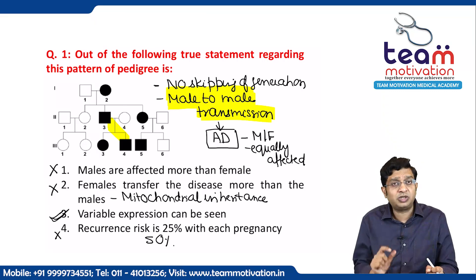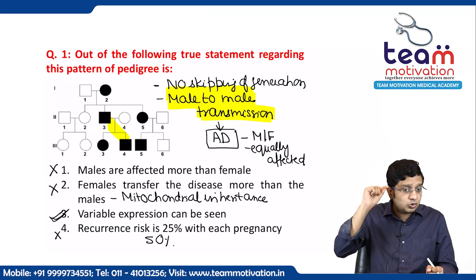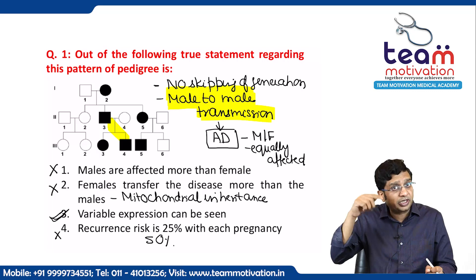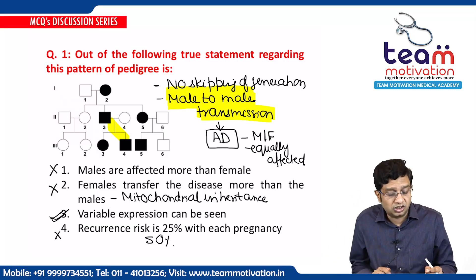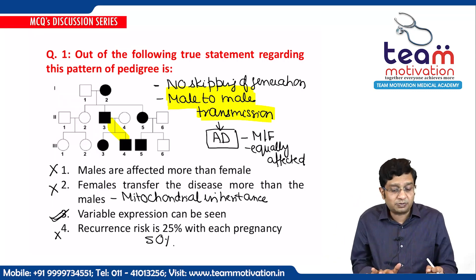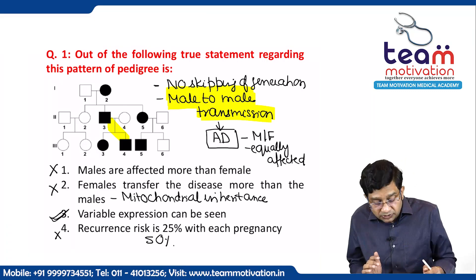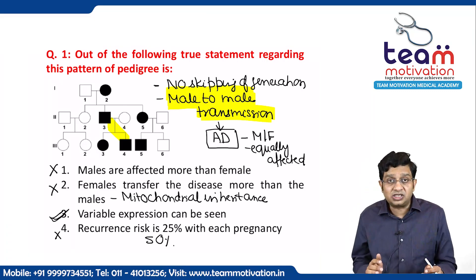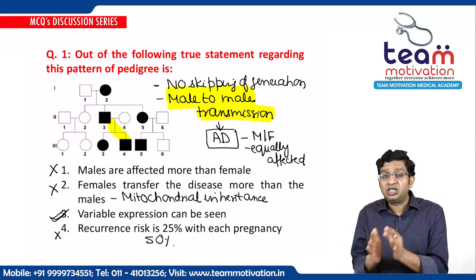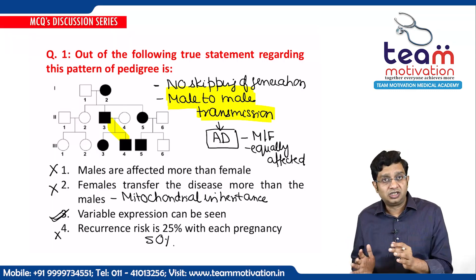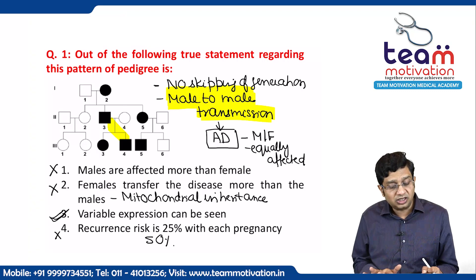See which disorder the first pedigree represents, then choose based on your notes and rule out the other options. Variable expression can be seen in autosomal dominant, and variable expression means the severity of the disease is different in different persons.